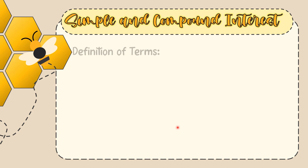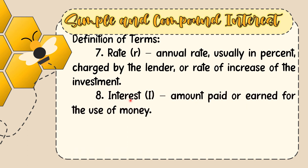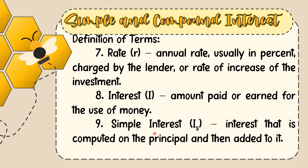The seventh term is the rate, symbolized as r — the annual rate, usually in percent, charged by the lender or the rate of increase of the investment. The eighth term is interest, symbolized as I — the amount paid or earned for the use of money. The ninth term is simple interest, symbolized as I sub s — the interest that is computed on the principal and then added to it.